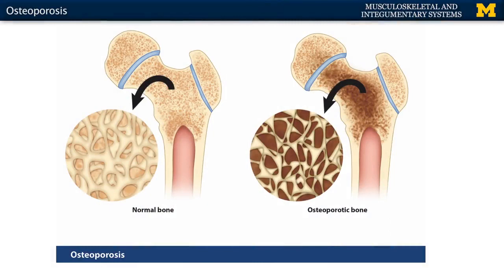Let's look at this illustration here. We're focused in on a femur, specifically the spongy bone region. As you can see in typical or normal bone, you will still have spaces — that's normal in spongy bone. In osteoporotic bone, osteoclast activity — remember, osteoclasts are resorbing bone — stays fairly normal in osteoporotic individuals.